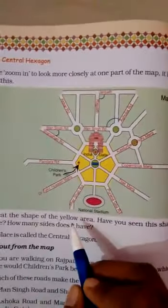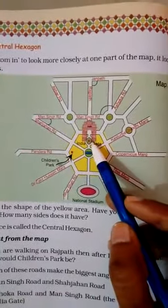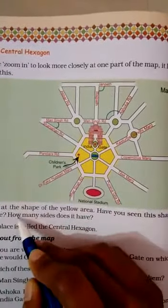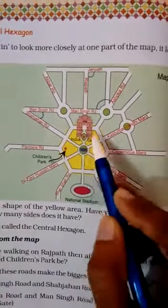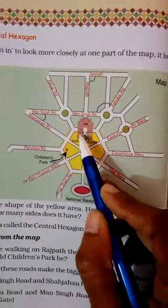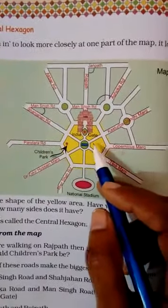The first question is: this shape — have you seen it before? What do you think? I have seen this shape before. This question is: how many sides does it have? Children, see how many sides. 1, 2, 3, 4, 5, and 6. It has 6 sides.